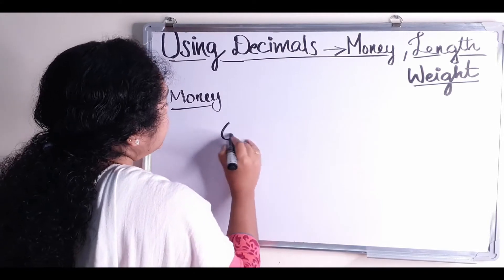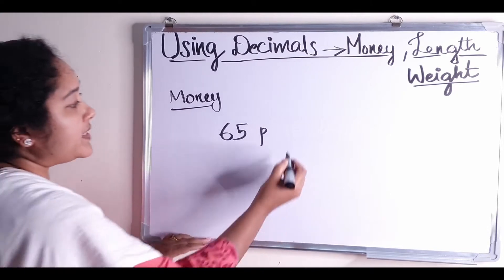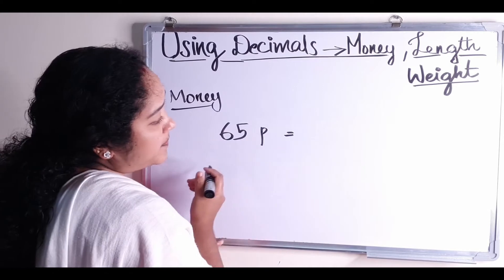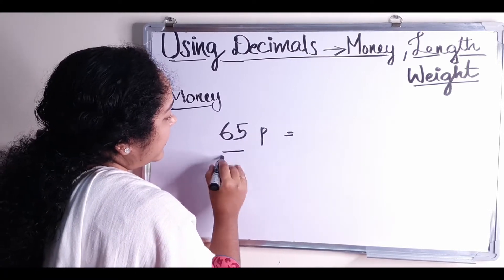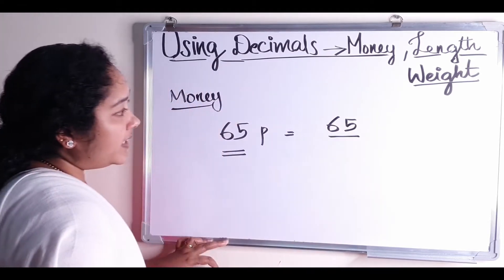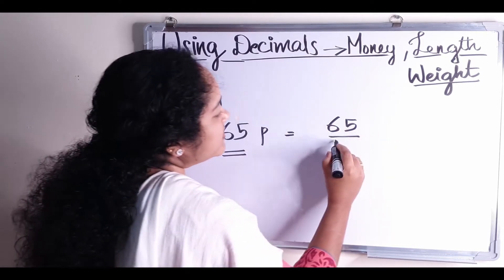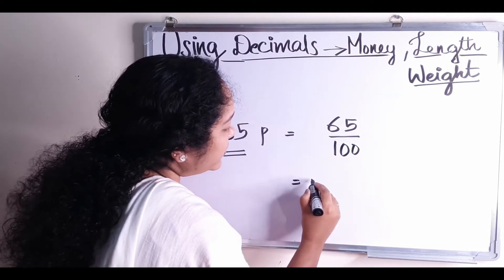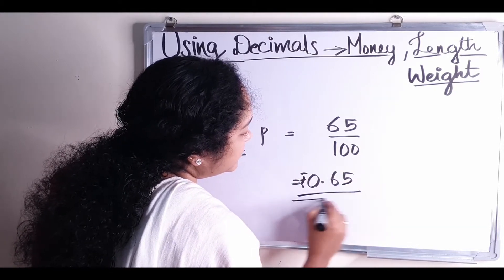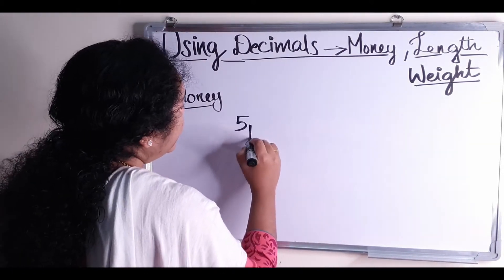Take a question: Convert 65 paise to rupees. To convert to rupees, the number is divided by the power of relation. The power of relation of paise and rupees is 100. That is equal to 0.65 rupees. Next one is 5 paise — that is equal to 5 by 100 rupees, which is 0.05 rupees.